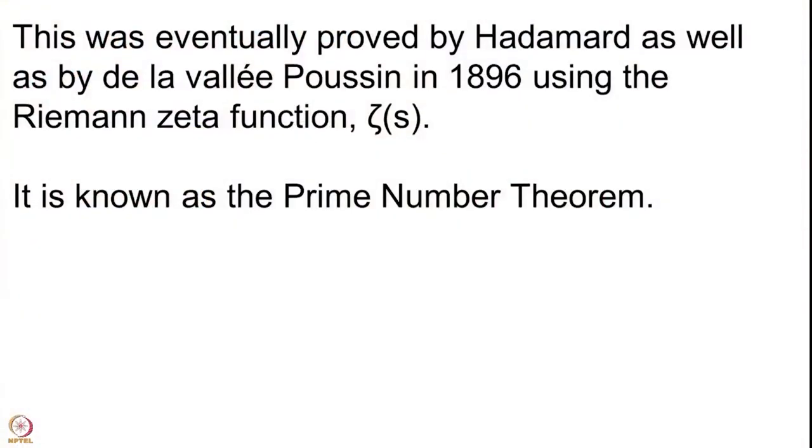Once the result was proved, mathematicians had to decide how to name it. Should it be called Hadamard's result, de la Vallée-Poussin's theorem, or Legendre's or Gauss's conjecture? Since several people were involved, mathematicians simply decided to call it the prime number theorem. This was proved in 1896, and in the early part of the 20th century, Hardy and others — prominent mathematicians in both number theory and analysis — started wondering about its proof.